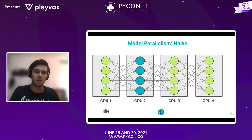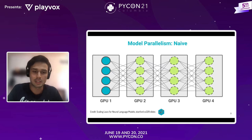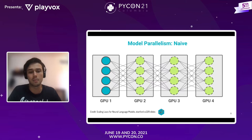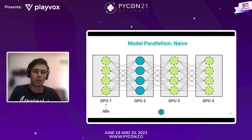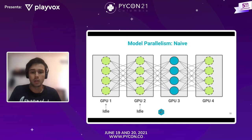En la forma básica del paralelismo por modelo, cada GPU tiene ciertas capas. La primera GPU recibe los inputs del modelo, calcula las activaciones y se los pasa a la siguiente. Luego la siguiente hace sus cálculos, pero mientras está haciendo el forward pass, la primera GPU ya no tiene nada para hacer. Esto genera mucho tiempo muerto en el uso de las GPUs.